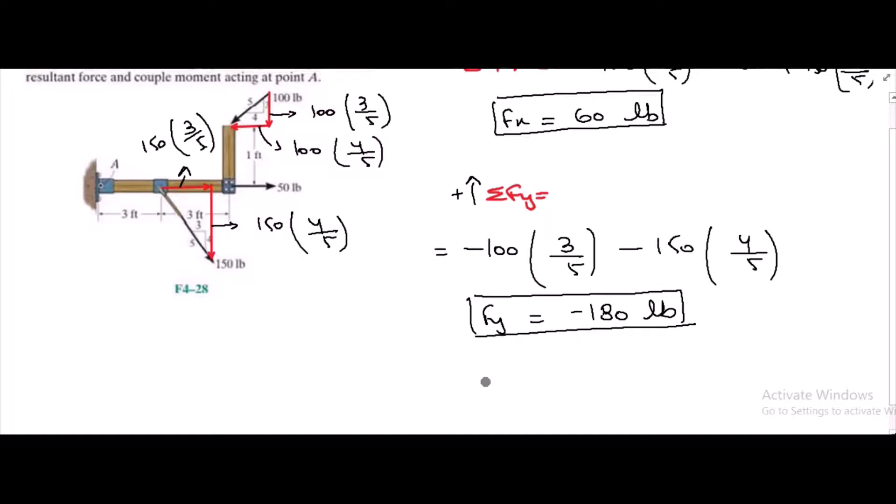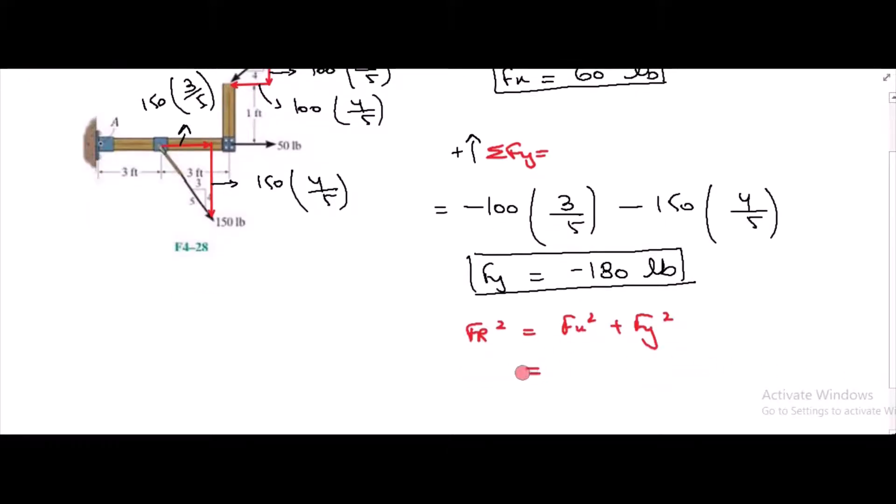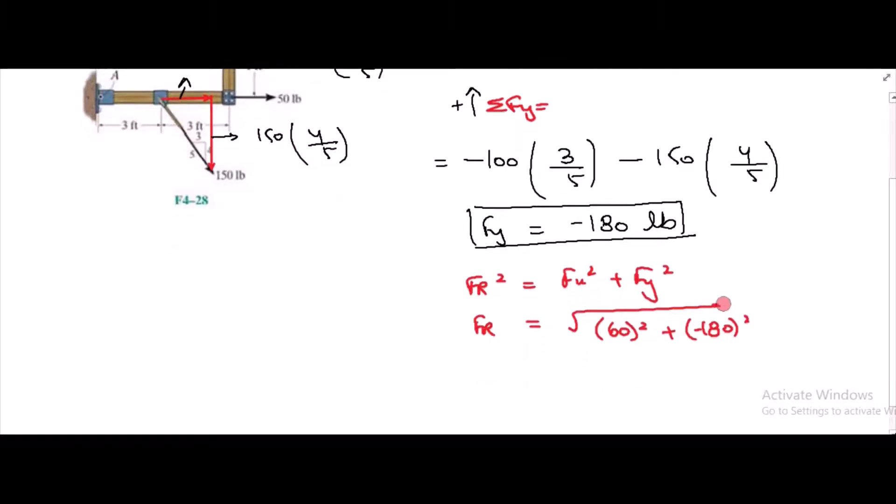Now we can find the resultant force FR by using Pythagoras theorem. So from here, FR is equal to square root of 60 squared plus negative 180 squared. FR equals 189.74 lb.